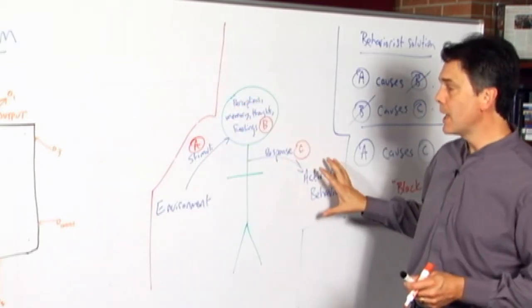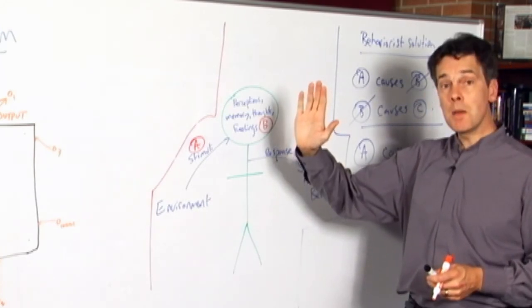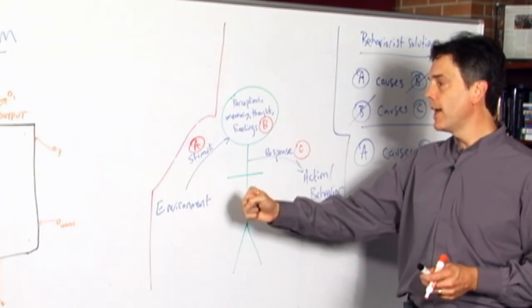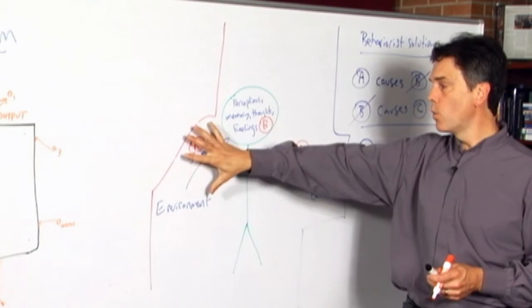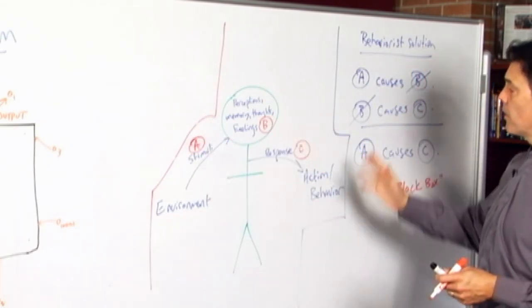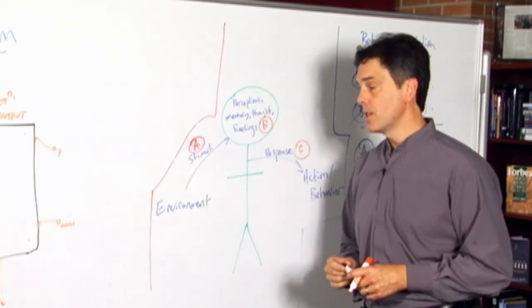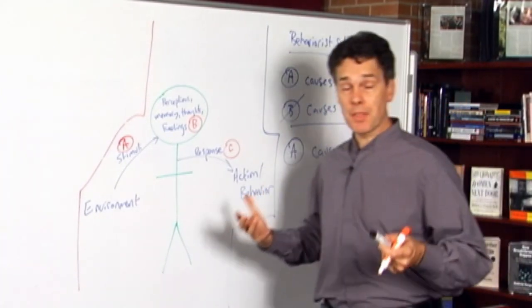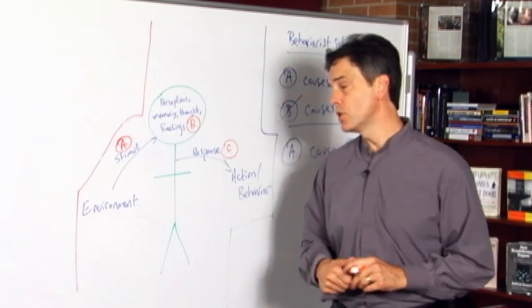Here are all of the ping pong balls, so to speak, impinging upon us, and here are all of the ping pong ball behaviors that are going on out here. We can come up with, over time, after lots and lots of observations, lots and lots of correlations, ironclad, or very near to it, ironclad predictions based on what kind of stimuli we have, what kind of behaviors we're going to get, and then working backwards, if we get certain kinds of behaviors, we can tell what kinds of stimuli necessarily gave rise to that. That's the methodology, that's the behaviorist technique applied to human psyche.